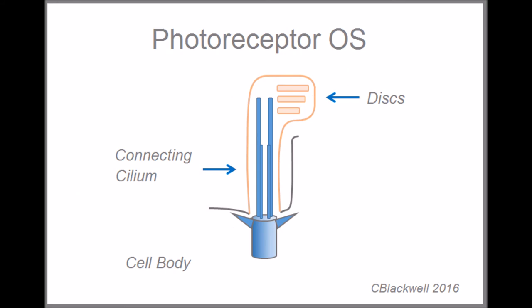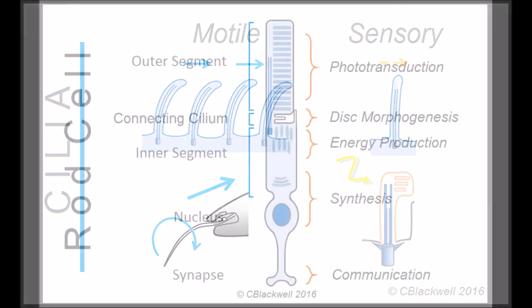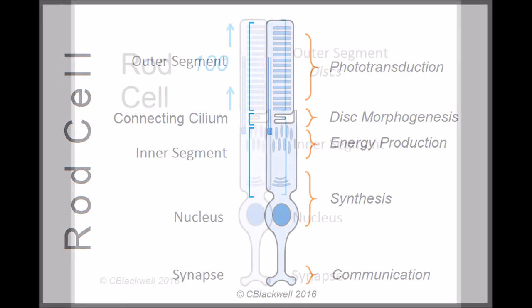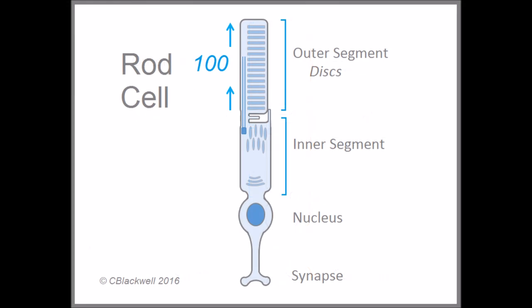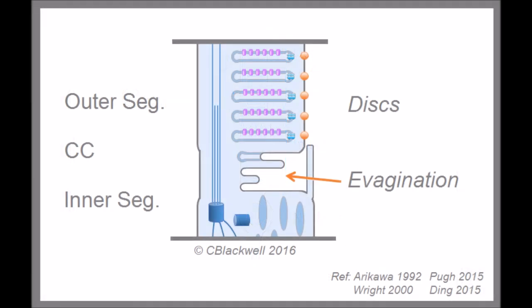Developmentally, the outer segment is a modified cilium. That is a feature these cells share in common with most other mammalian cells. Creation of new discs occurs at the base of the outer segment. Each photoreceptor sheds about 100 discs per day. Therefore, it must replace those 100 discs each and every day. There now seems good evidence that the discs are formed at the base of the outer segment by the process of evagination.